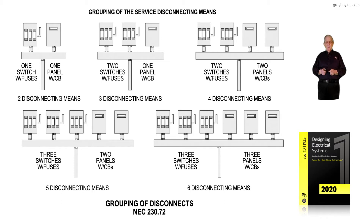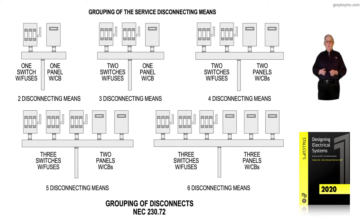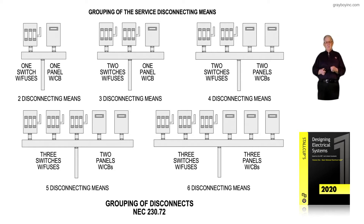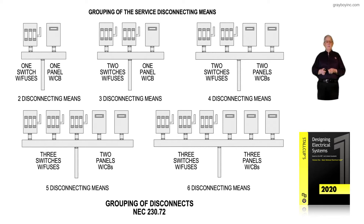If you need a little bit more power, you could have two switches with fuses and a panel board with a main. And if you need even more power, you could arrange four switches — two disconnect switches with fuses and two panel boards with two mains — making four total, just as 230.71B1 through 4 requires.